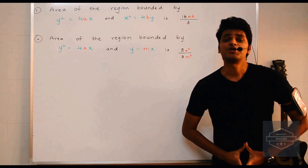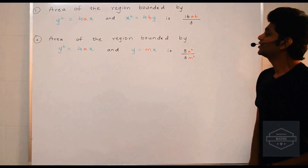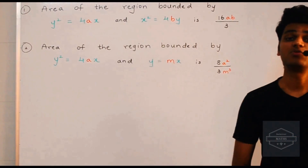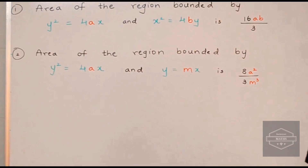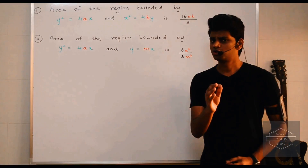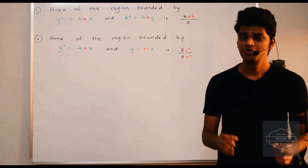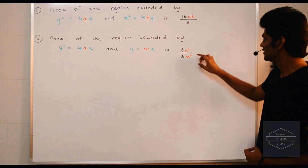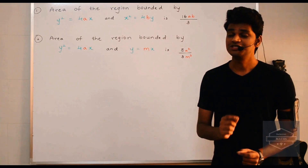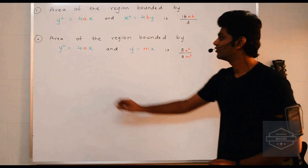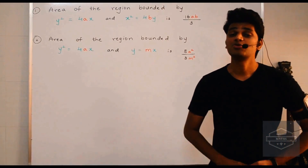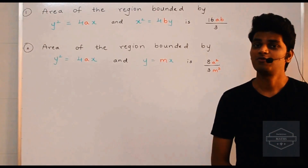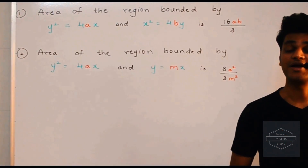The next shortcut: the area of the region bounded by a parabola y² = 4ax and a line y = mx is given by 8a²/3m³. Here, a and m are the constants we find from the two equations. So 8a²/3m³ is the formula to find the area of the region lying between the parabola y² = 4ax and the line y = mx.